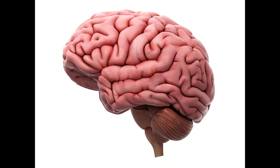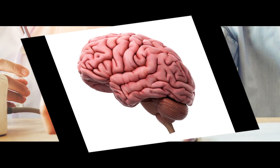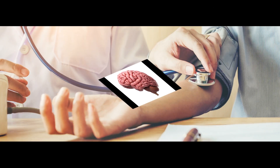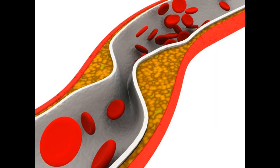The brain is another vulnerable tissue, and stroke is not uncommon in diabetics. Stroke occurs either due to bleeding caused by high blood pressure — which is a common complication of diabetes — or due to the inability to supply some parts of the brain with oxygen, again due to vessel damage.